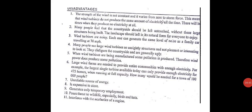Now the disadvantages: the strength of the wind is not constant — it varies from zero to storm force. Unlike a diesel or coal power plant, you cannot control the wind speed. This means wind turbines do not produce the same amount of electricity all the time, and when wind speed is low they produce no electricity. On average, wind turbines produce electricity only around 20 to 25 percent of the time.